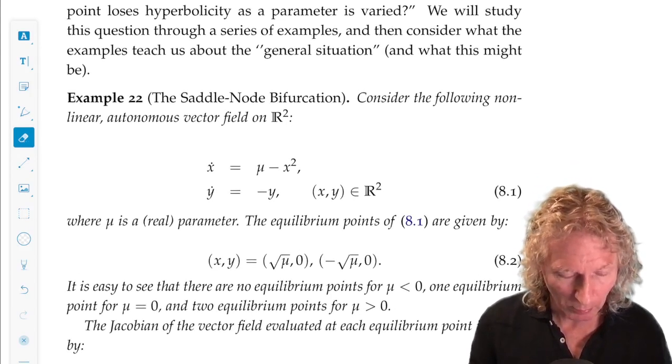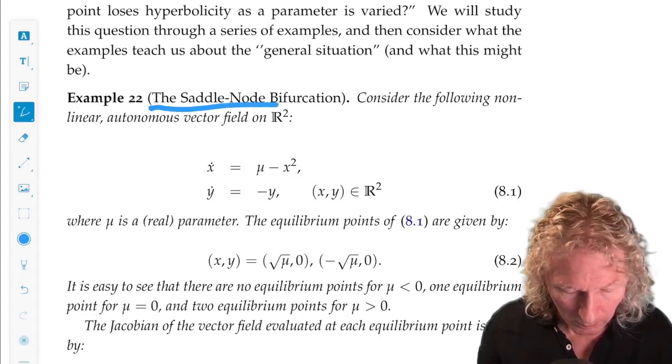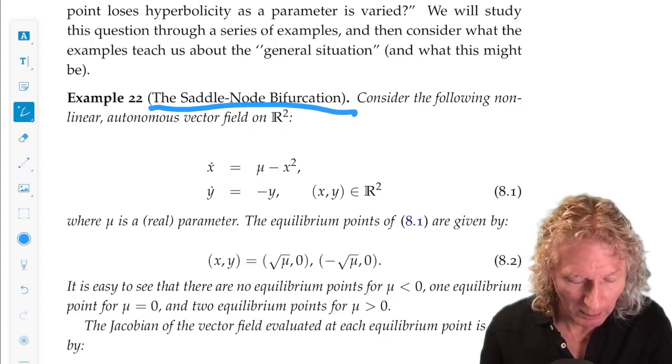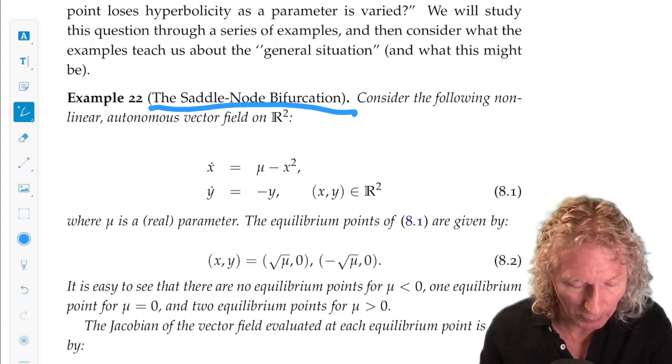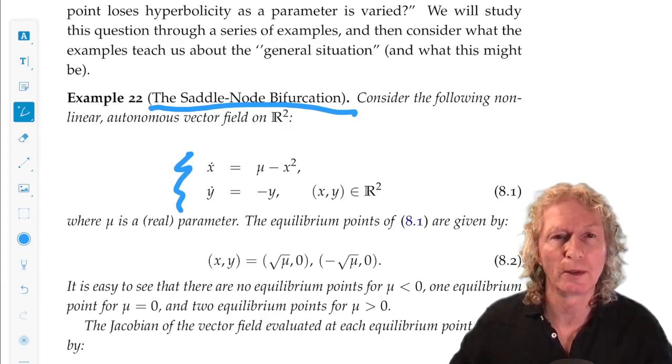So the first example is a saddle node bifurcation. We have a nonlinear autonomous vector field on the plane: x dot equals mu minus x squared, y dot equals minus y.